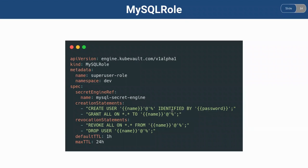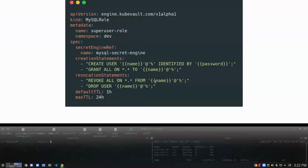We can see the YAML of a MySQL role here. The kind is MySQL role. We have provided the name and the namespace. In the spec section, we need to specify the secret engine ref. In the creation statement and revocation statement, we have provided the SQL queries that will be applied during the creation and revocation of the role. We have also provided the default TTL and the max TTL section.